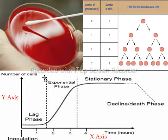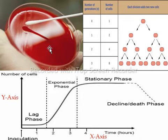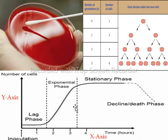Now we will discuss bacterial growth phases by isolating bacteria and putting them on culture media, that is, on a culture plate. Here we grow bacteria artificially inside a microbiology lab by providing certain nutrients necessary for bacterial growth. Bacteria have four growth phases, which we can view on a graph, with time on the x-axis and number of bacterial cells on the y-axis.